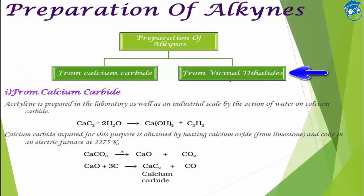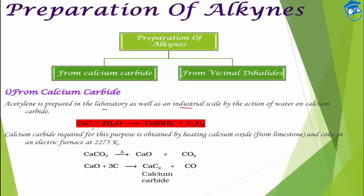First, let's see how it can be prepared from calcium carbide. It can be used for laboratory preparation as well as industrial use. Acetylene can be prepared by the reaction of water with calcium carbide. The formula of calcium carbide is CaC₂. On reacting with water, it produces calcium hydroxide as well as acetylene.